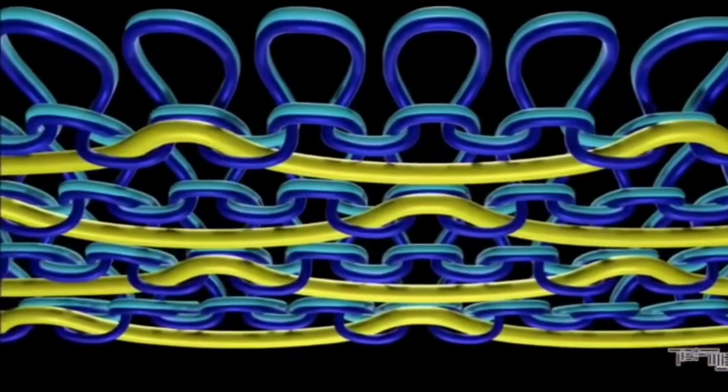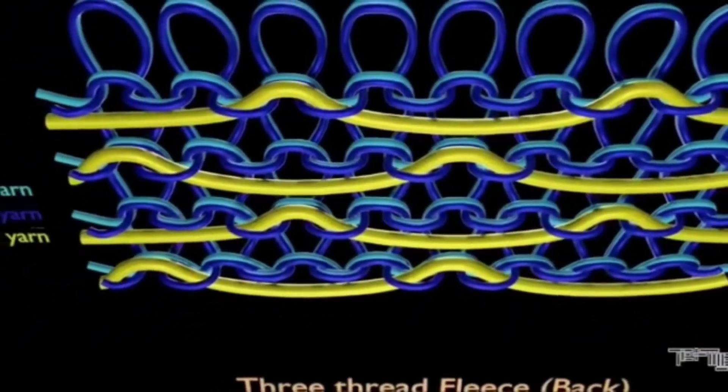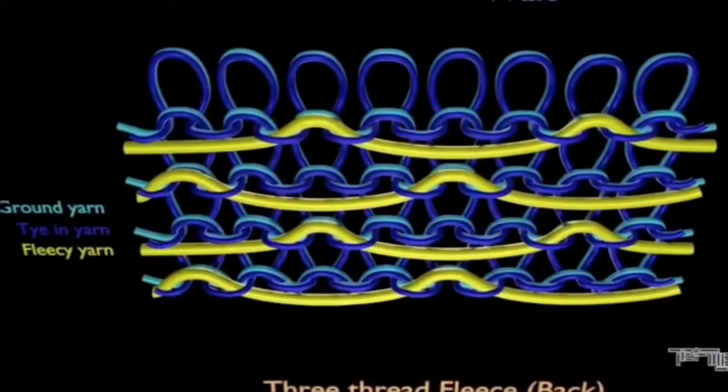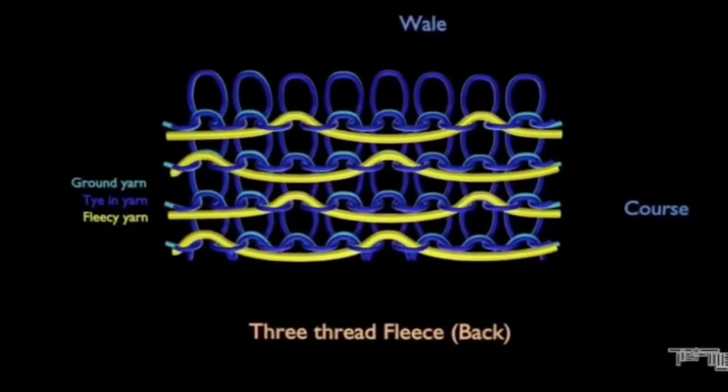This results in the fleece yarn being floated on the technical back of the fabric and held in place by the wales of plated tie-in and ground yarns. The technique hides the fleece yarn from the technical face so that it will be exposed only on the back.